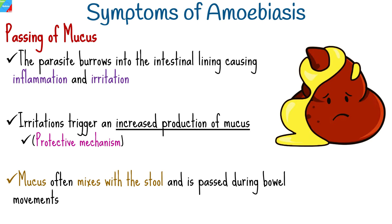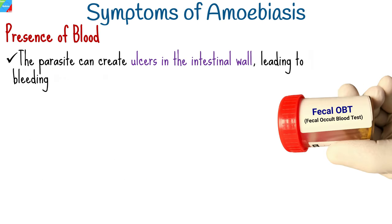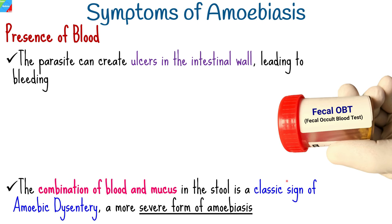In addition to mucus, amoebiasis can also cause blood to appear in the stool. This happens because the parasite can create ulcers in the intestinal wall, leading to bleeding. The combination of blood and mucus in the stool is a classic sign of amoebic dysentery, a more severe form of amoebiasis.